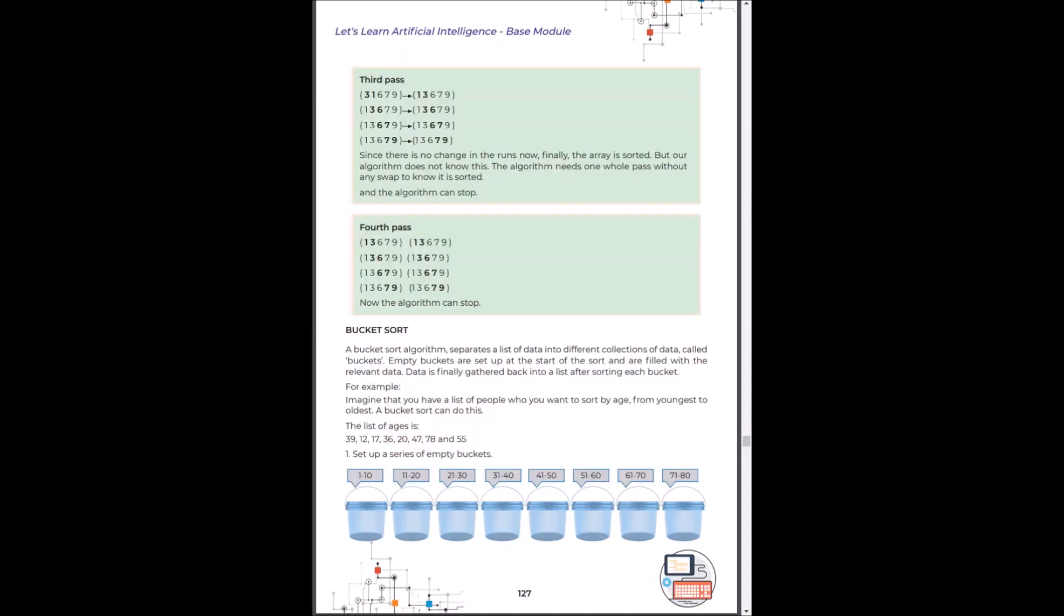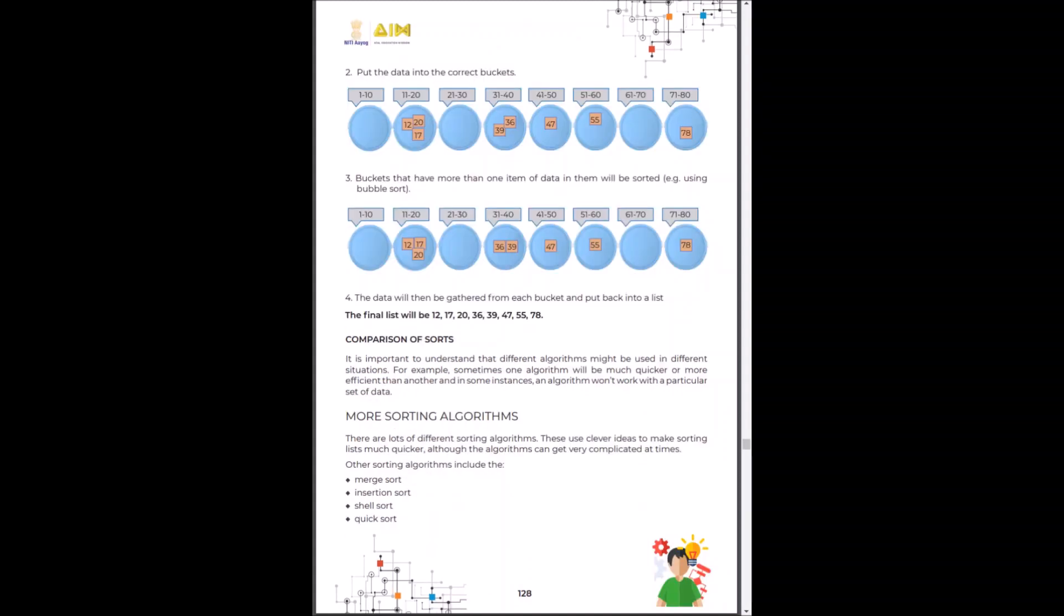Bucket sort, just like the name suggests, separates a list of data into different collections of data called buckets. Bucket sort puts the data into the correct buckets and then buckets that have more than one item of data are sorted using bubble sort.